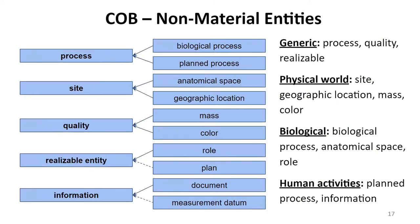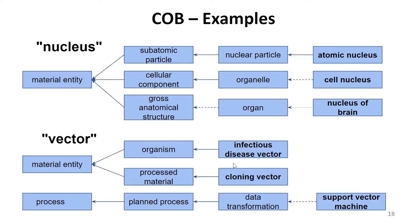Some other branches of COB include process, site, quality, realizable entity, and information. From there you go down to more familiar concepts: biological processes, planned processes, qualities like mass and colour, and information entities such as documents. One thing that helps is disambiguating terms that may be ambiguous, such as 'nucleus' or 'vector' — COB makes these very explicit: atomic nucleus, cell nucleus, nucleus of brain, and different senses of the term 'vector'.